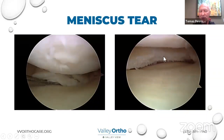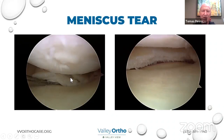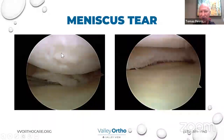In cases where repair isn't possible, we do what's called a meniscectomy — we go in and arthroscopically trim up the meniscus to give a good, stable rim. We try to preserve as much of the meniscus as possible, but it's better to have a little less meniscus than to have a big tear in your knee, because those rough edges over time will rough up that smooth cartilage.